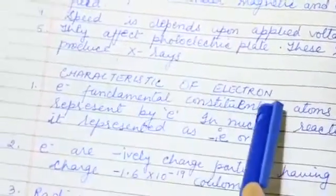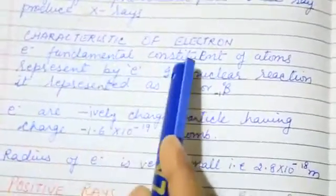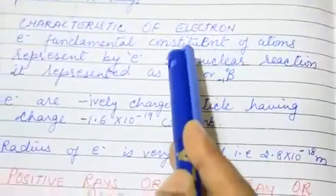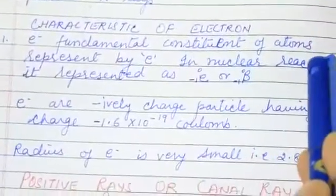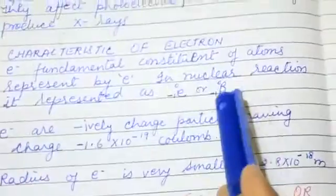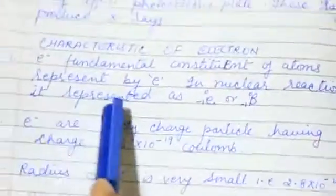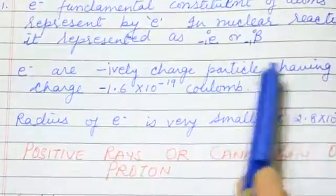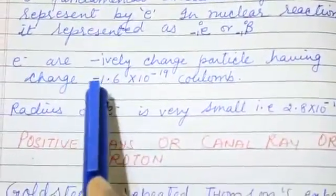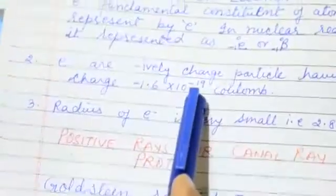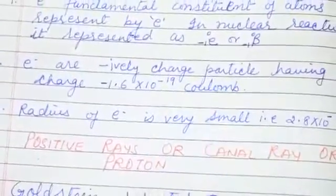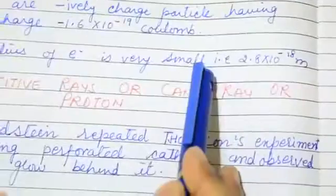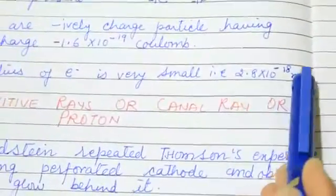Characteristics of electron is, electron is a fundamental constituent of atoms represented by E. In nuclear reaction, it is represented like this. Electron is a negatively charged particle having charge minus 1.6 into 10 to the power minus 19 coulomb. The radius of electron is 2.8 into 10 to the power minus 18 meter.